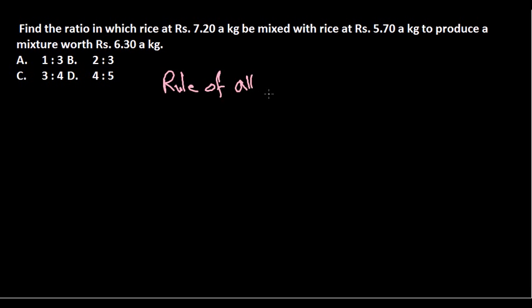The rule of allegation is telling us something like this: cost price of the first, cost price of the second kind, and in the middle we always put the mean price.